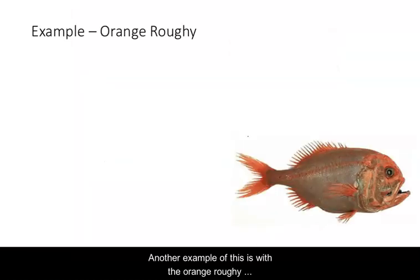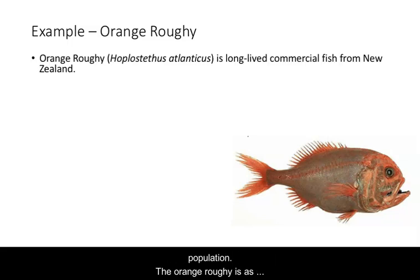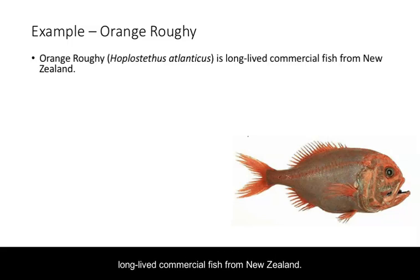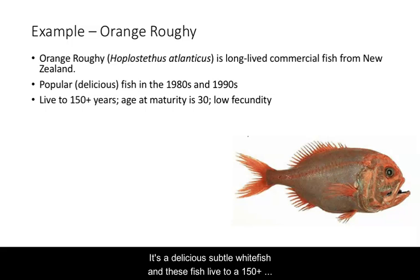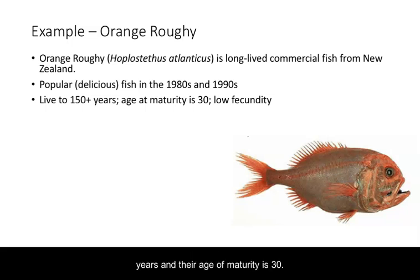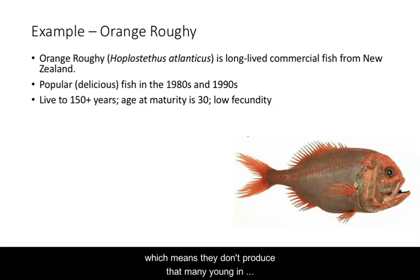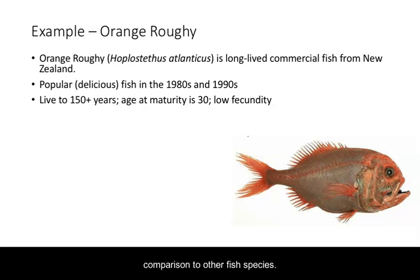Another example is the orange roughy population. The orange roughy is a long-lived commercial fish from New Zealand that was very popular in the 1980s and 1990s. It's a delicious, subtle white fish. These fish live to 150-plus years, but their age of maturity is 30, and they have really low fecundity, meaning they don't produce many young compared to other fish species.